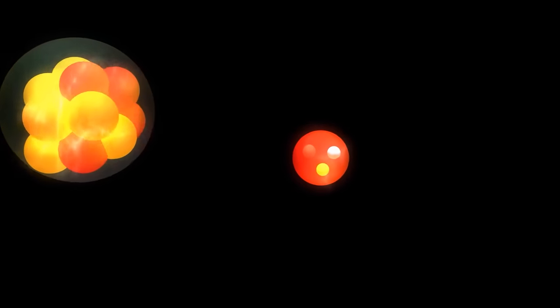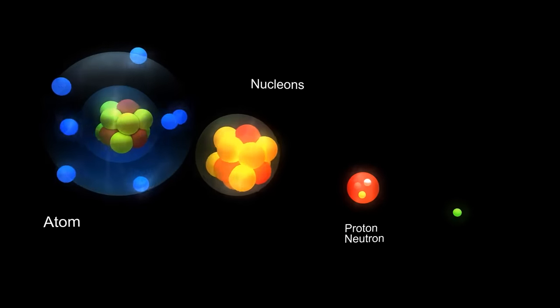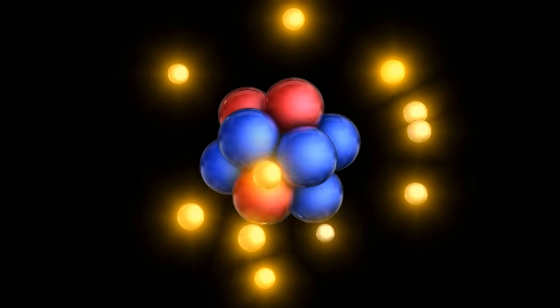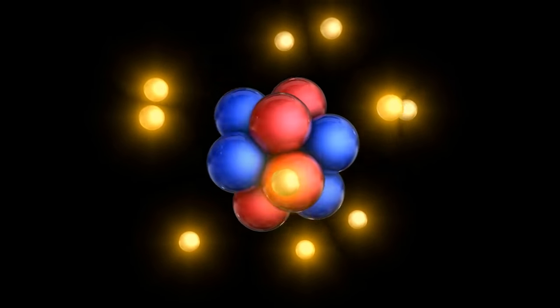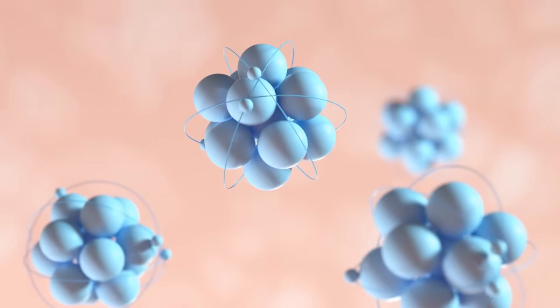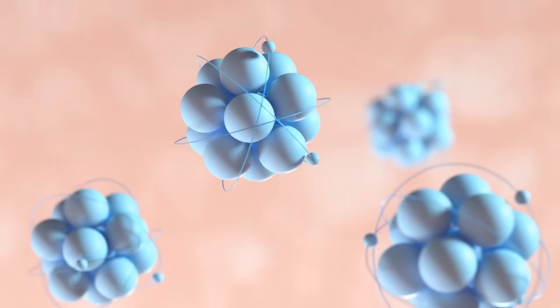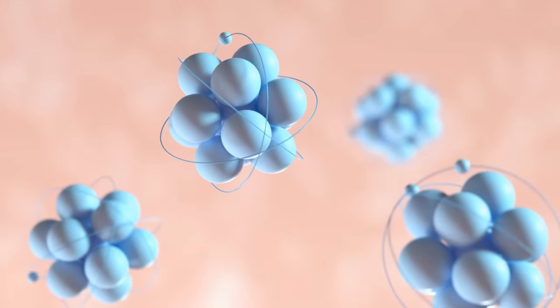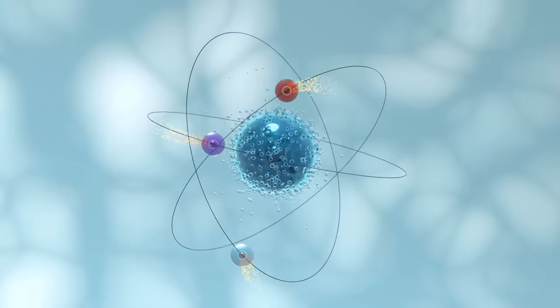Within these subatomic particles, we encounter quarks, minuscule entities that constitute matter, and gluons, particles entrusted with carrying the force. The configuration of a proton involves two up-quarks and one down-quark, while a neutron comprises two down-quarks and one up-quark.